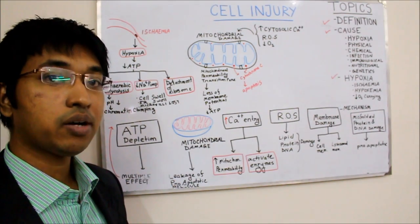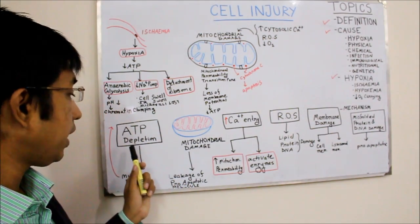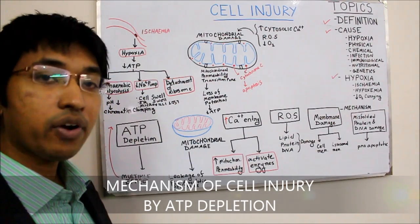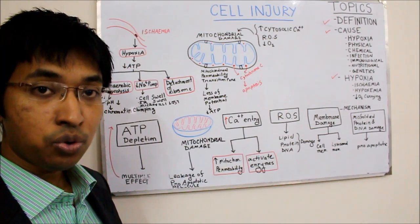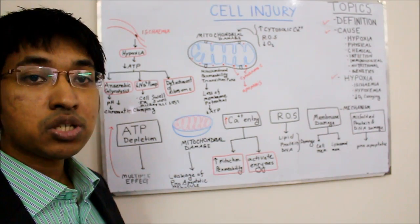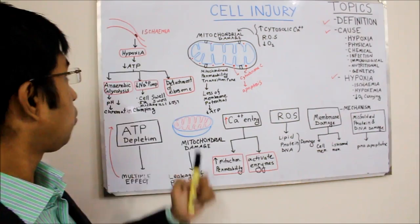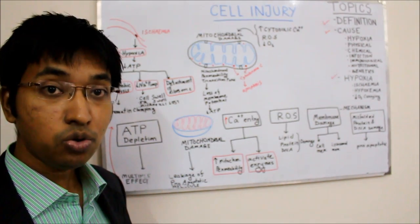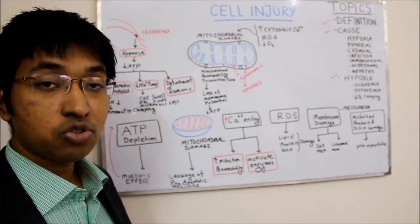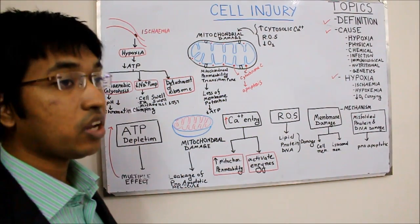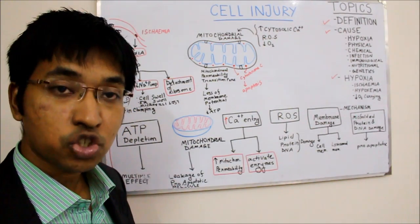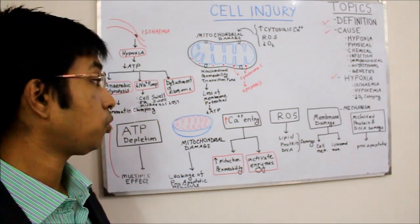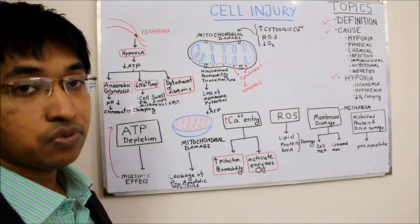The first mechanism by which cell injury can occur is ATP depletion. Say for example, there was ischemia in a blood vessel — that means blood flow was reduced, perhaps due to some thrombus or occlusion. When blood supply is reduced to that tissue, oxygen supply gets low, which is known as hypoxia. Then the electron transport chain cannot function properly because oxygen is used as an electron acceptor, so there will be less ATP synthesis.